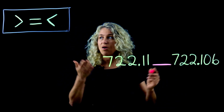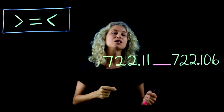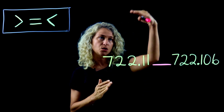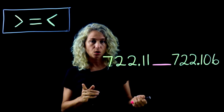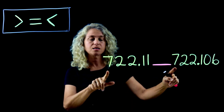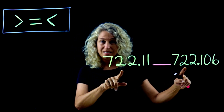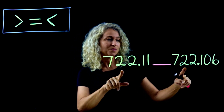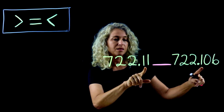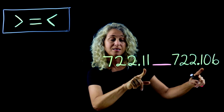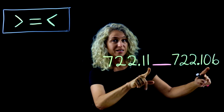Let's look at these decimal numbers to see if they are greater than, equal to, or less than one another. Instead of rewriting them and lining up the decimals again, I want to show you another method. Start with the greatest value: the hundreds place — they're the same. The tens place — the same. The ones place — the same. Continue on: the tenths place — the same.